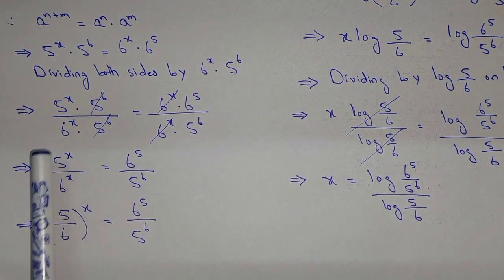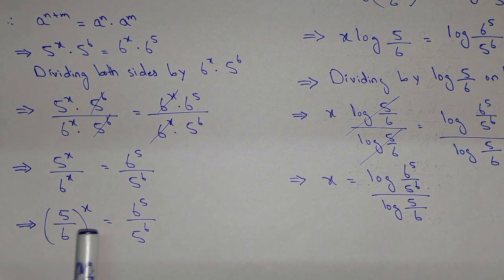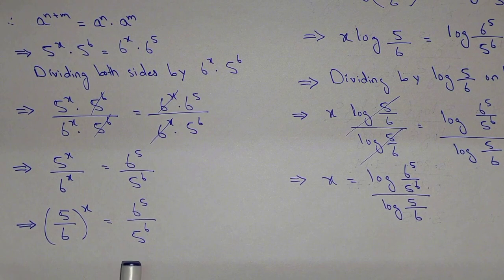We can write this as (5/6)^x = 6^5 / 5^6.